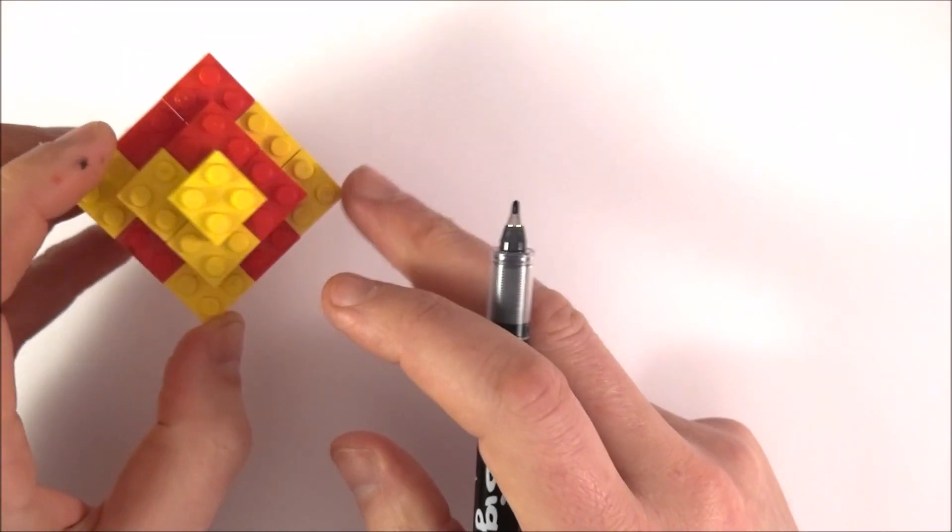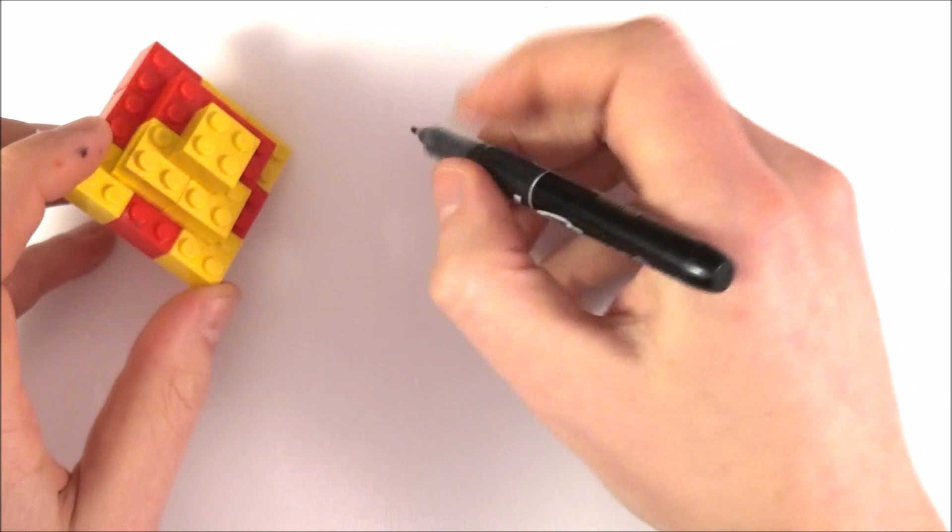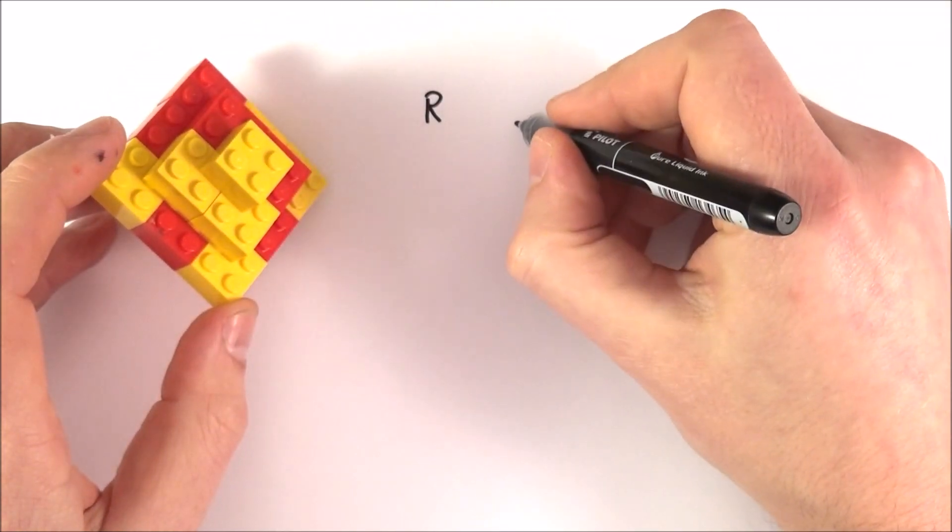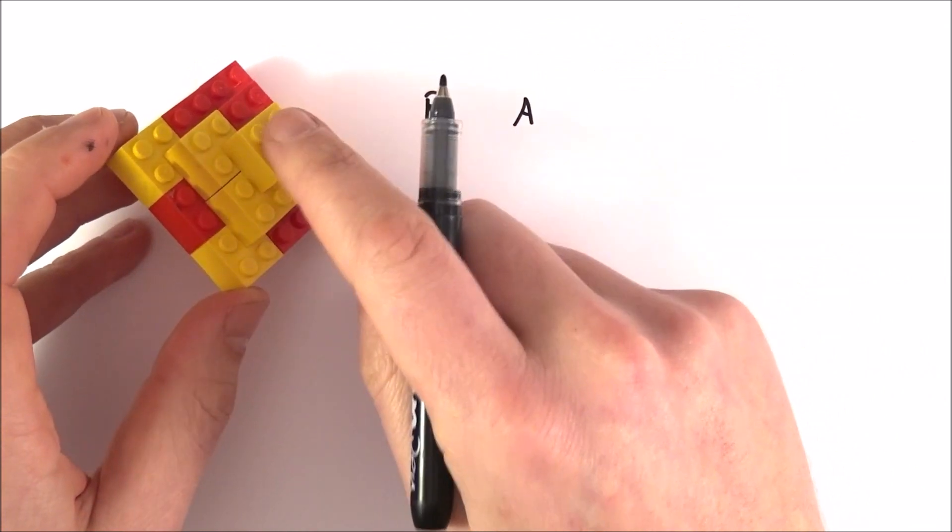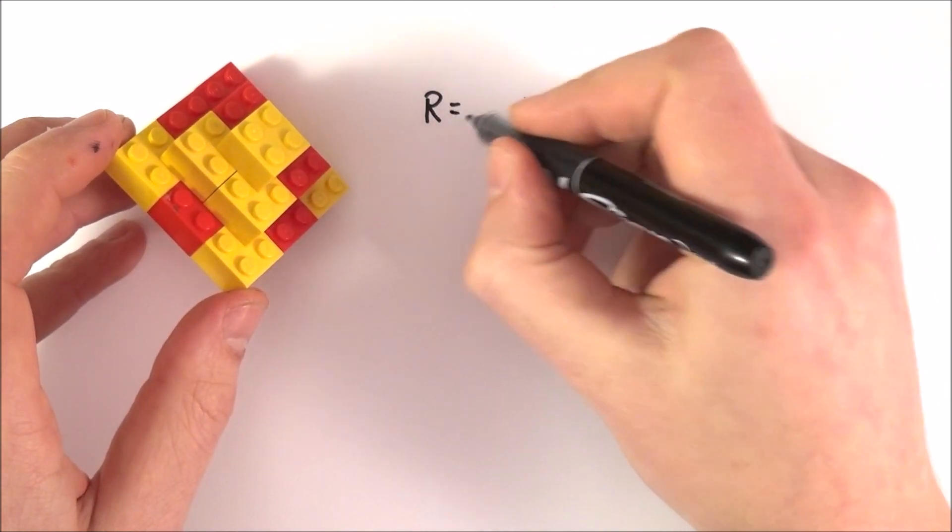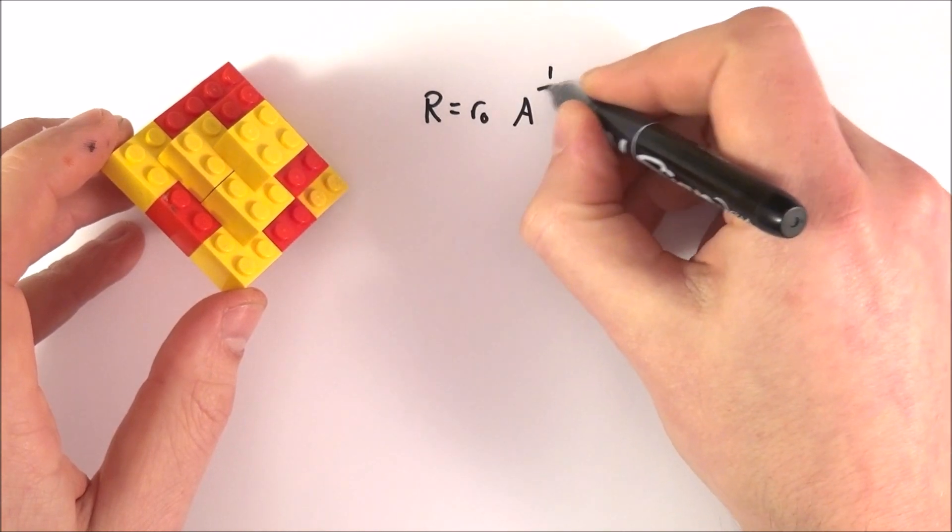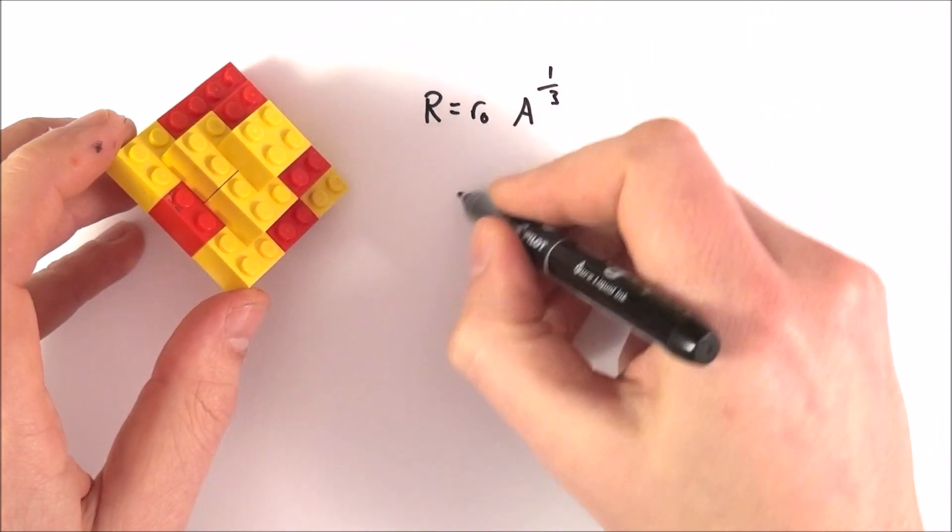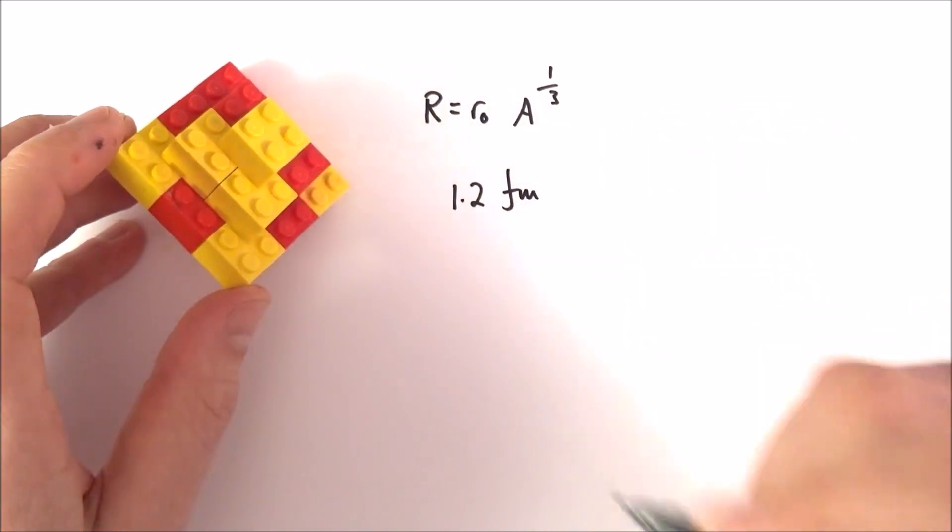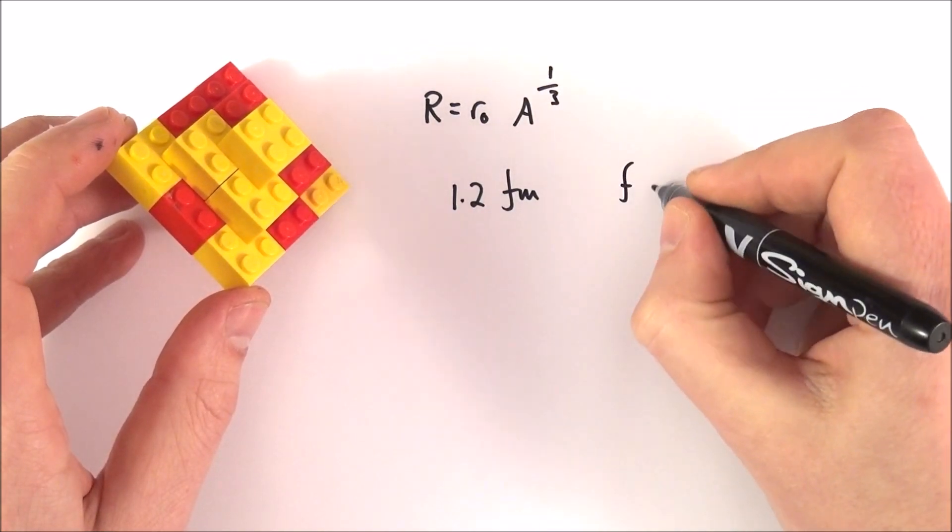If we look at the nucleus of pretty much any atom, we can look at the radius. The radius is going to depend upon the total number of protons and neutrons inside it, which is the nucleon number. We find that R is equal to r naught A to the one-third. This constant r naught is equal to 1.2 femtometers.